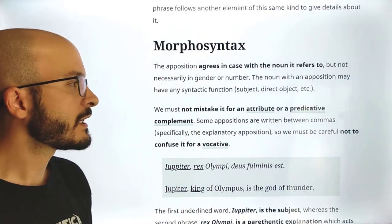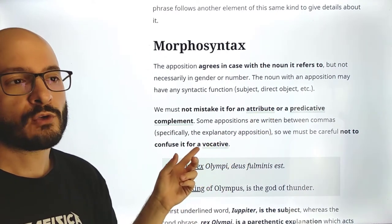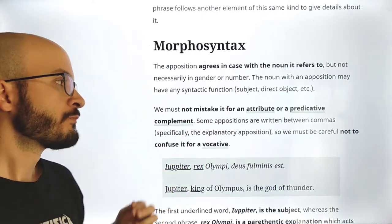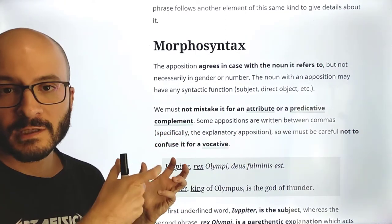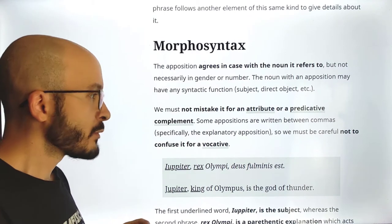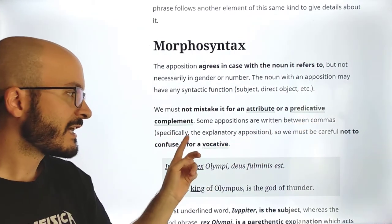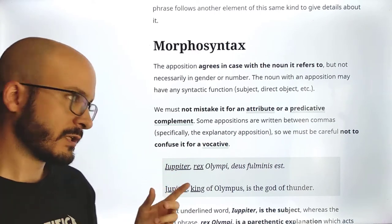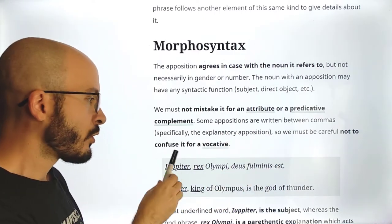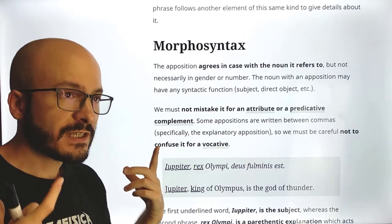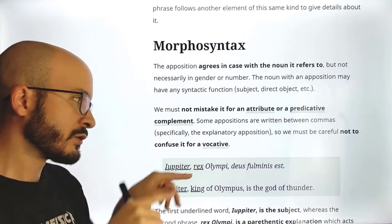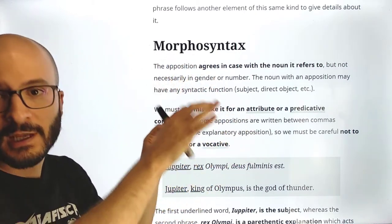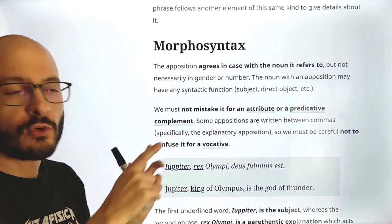We must not mistake the apposition for an attribute. Remember that an attribute is like, for example, 'Gaius altus est,' where 'altus' is the attribute of Gaius. Or a predicative complement, which is something we are going to study in the very next class. Some appositions are written between commas — specifically the explanatory apposition. We must also be careful not to confuse it for a vocative, because vocatives are also written between commas.